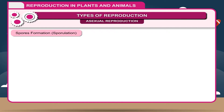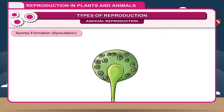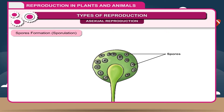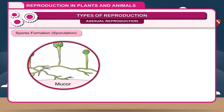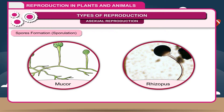Spore Formation (Sporulation). Some seedless plants produce rounded structures called spores. Spores are small rounded bodies surrounded by a thick wall. Spores may be motile or non-motile. During favorable conditions, spores germinate into new organisms. For example, mucor, rhizopus, etc.